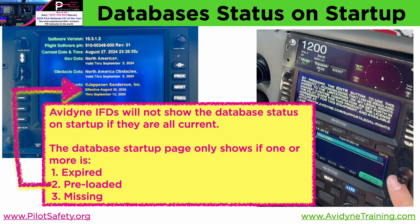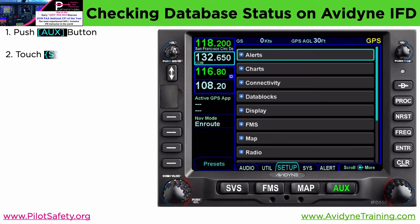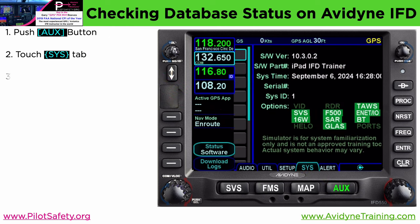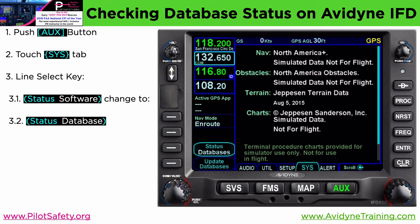So if your IFD has current databases and it won't show the status startup page because they're all current, and the examiner says 'I want to see it' — no problem. On any Avidyne IFD it's very easy in the 10.3 software. All you have to do is push the auxiliary button, then touch the system tab and change the status software LSK to status databases, and there you go, Mr. or Mrs. Examiner — there are all my databases.